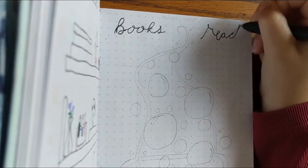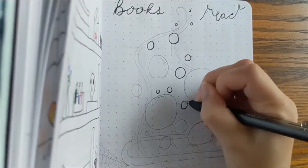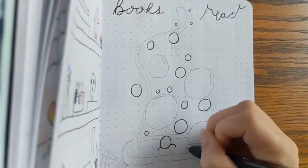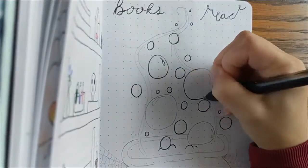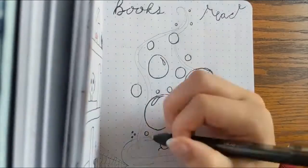Next to that page, I have my books read spread. I like to have them back to back so that I can see what I wanted to read versus what I did read during the month. This is supposed to be a witch's cauldron brewing a potion, you know, boil, boil, toil and trouble.